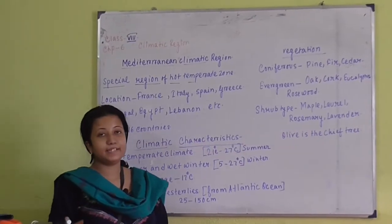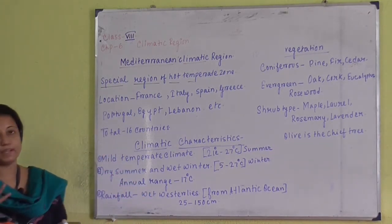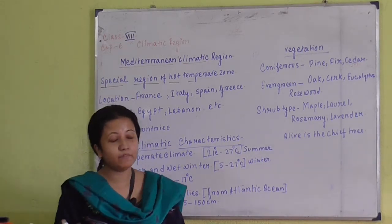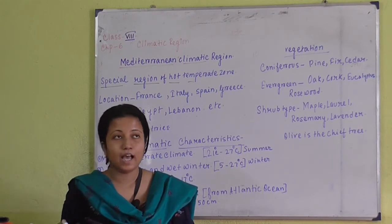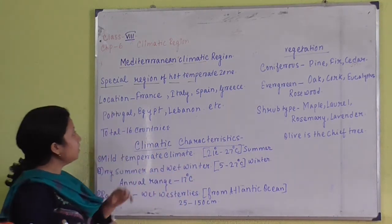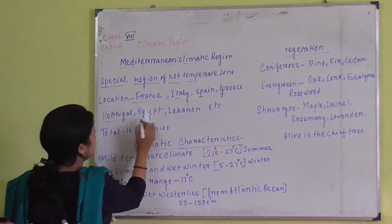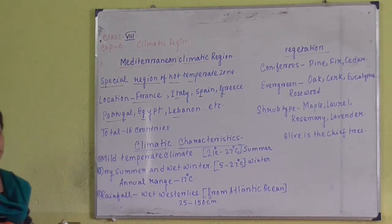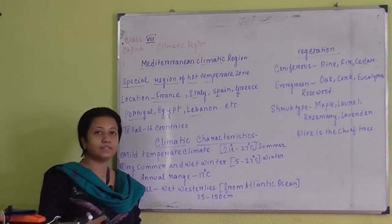The next type is the Mediterranean type of climate. This is a special region of hot temperate climate, generally found in countries around the Mediterranean Sea. There are 16 countries which experience this type of climate, including France, Italy, Spain, Greece, Portugal, Egypt, Lebanon, and others. Some portions of California also experience this type of climate.